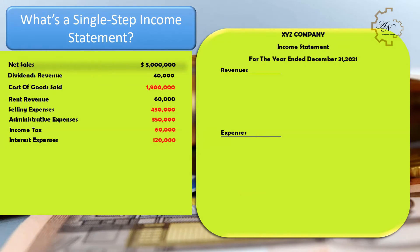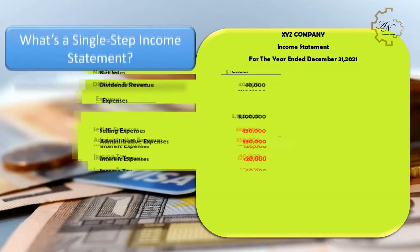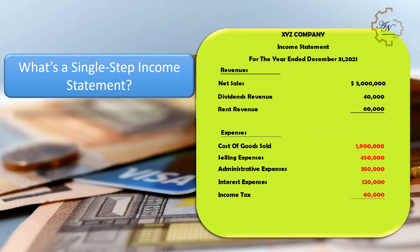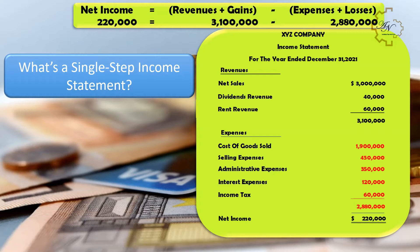A single-step income statement presents the revenues, expenses, and ultimately the profit or loss generated by a business, using just one equation to calculate profits. The equation is: Net Income = (Revenues + Gains) − (Expenses + Losses). It offers straightforward accounting, is easy to understand, and relatively easy to prepare. On the statement you can see revenues and expenses, with the residual being net income.